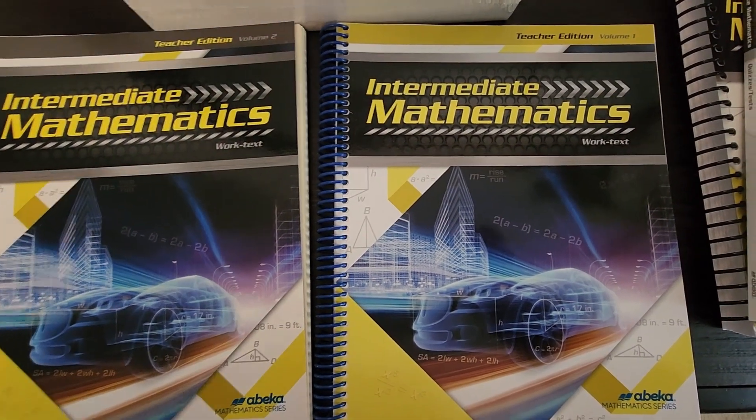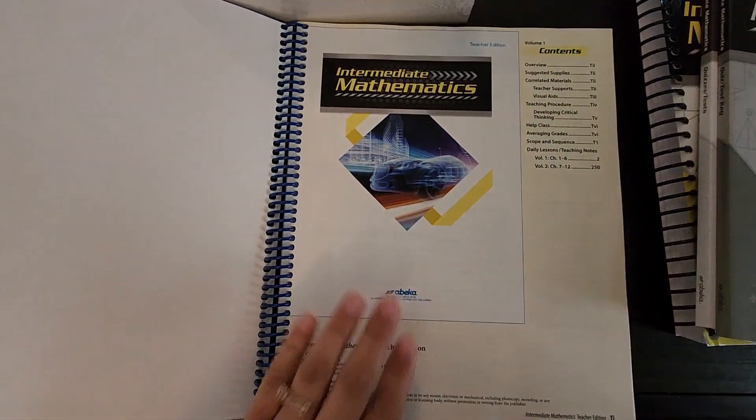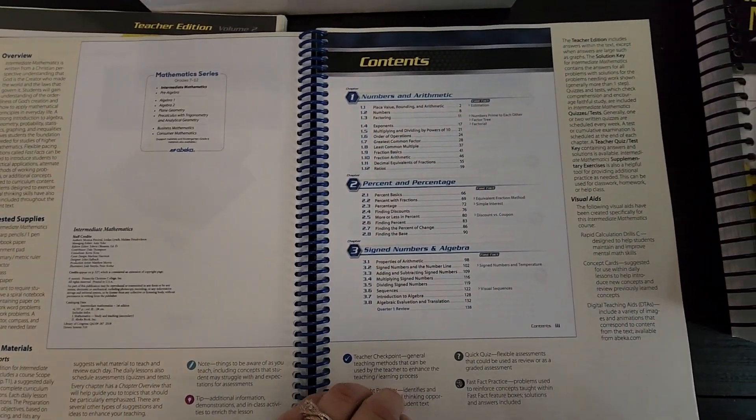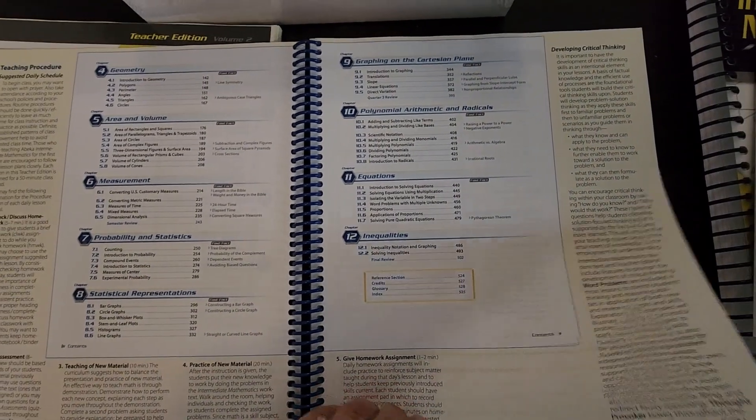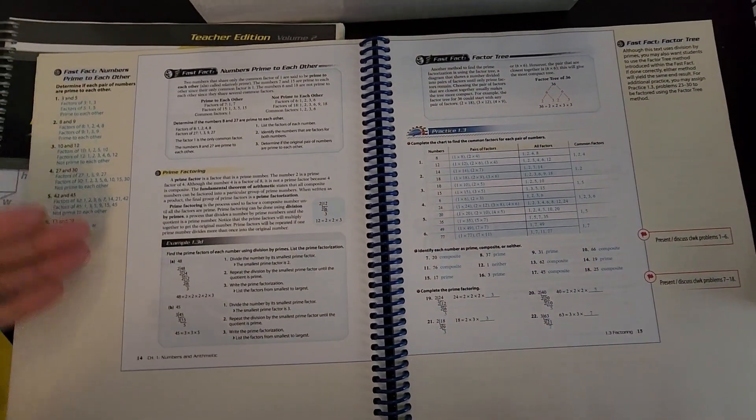This is the teacher edition. We have volume 1, volume 2. And the teacher edition is laid out similar to the student text with the exception of notes on the side.